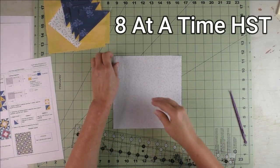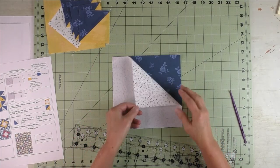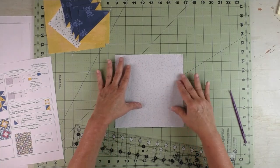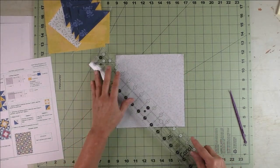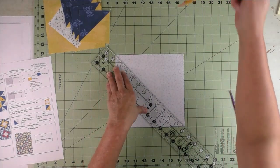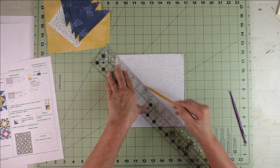Eight at a time half square triangles. We take our two squares and place them right sides together and put the light fabric on top. We're going to draw two diagonals across this on the light side.